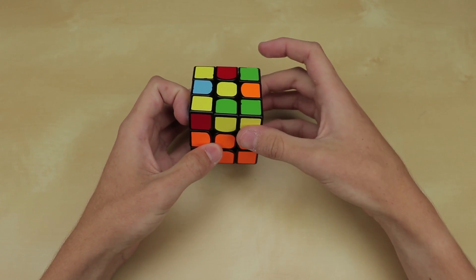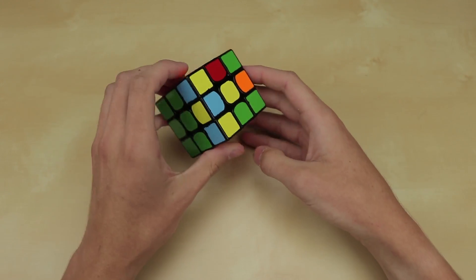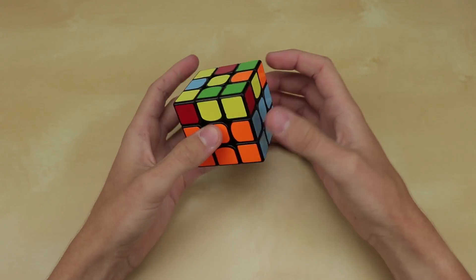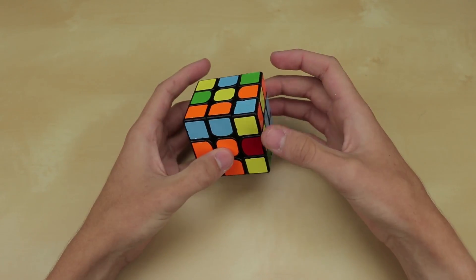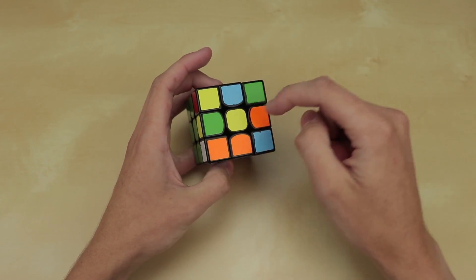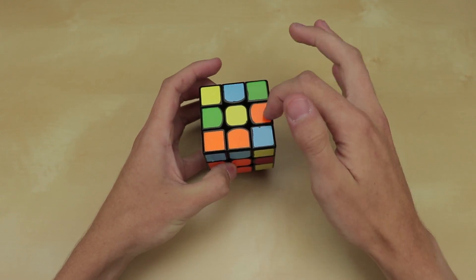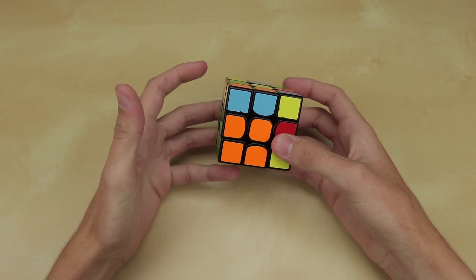So if you were to insert the last F2L pair like this and get a case like this, where you just have a dot in the middle, then I wouldn't be able to solve this. I do not know the algorithm for this case at all. Instead, I use partial edge control. So basically what that means is as you're inserting your last F2L pair, if you notice that you will get a dot case, like I can tell that since none of these edges are oriented, that I will get a case like that.